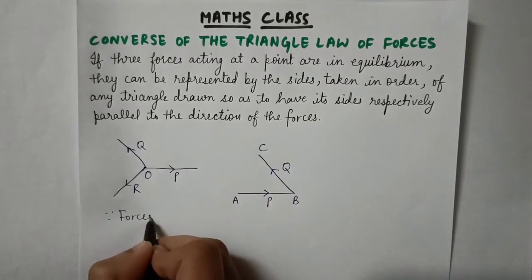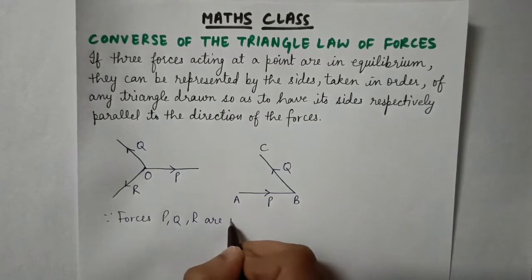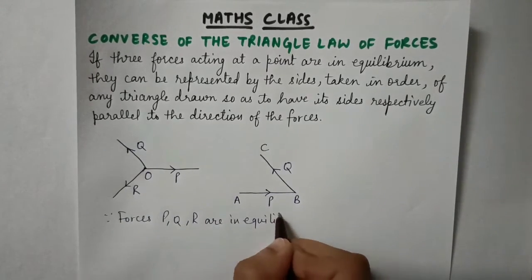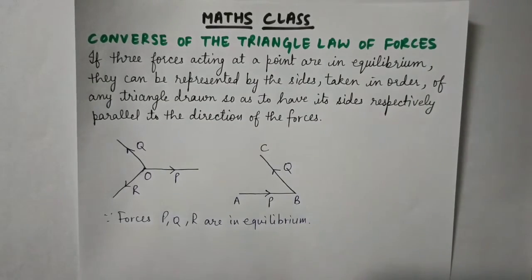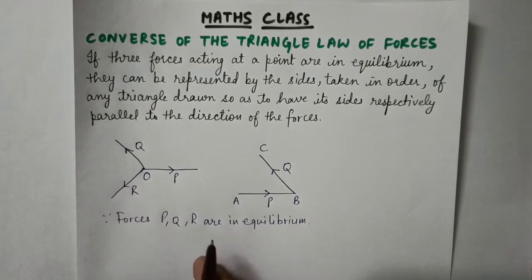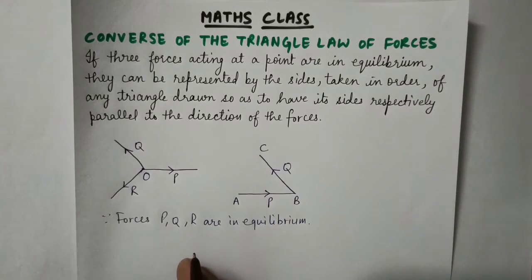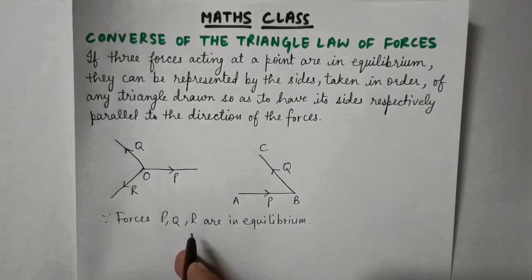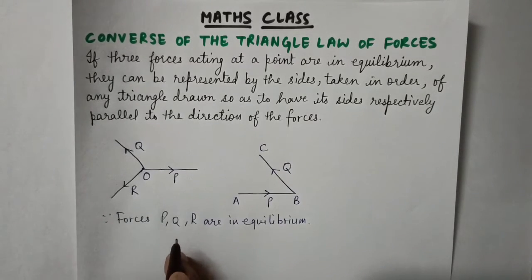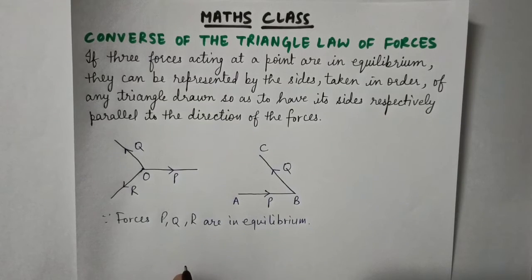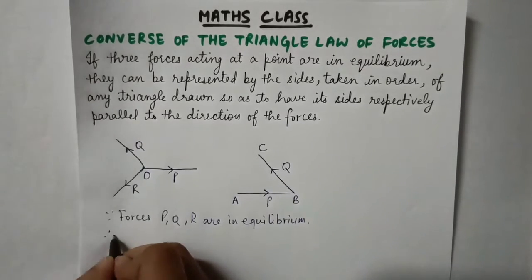Since forces P, Q, and R are in equilibrium, the resultant of these three forces is equal to zero. We can move one of the forces — let's say R — to the other side of the equation. So the R force will be equal to the resultant of forces P and Q, but since it has been moved to the other side of the equation, there will also be a negative sign with it.